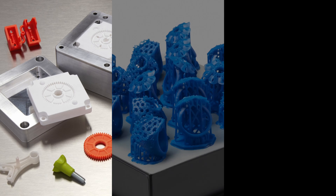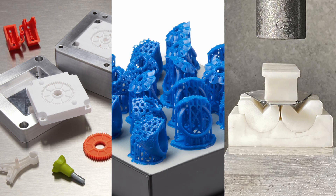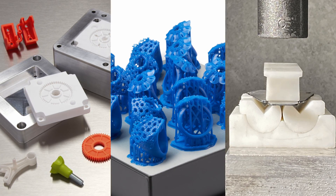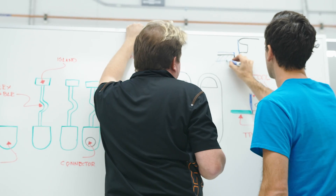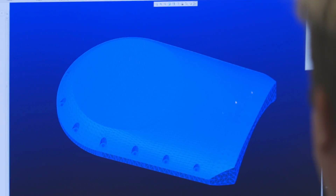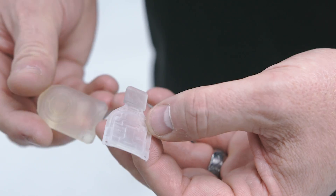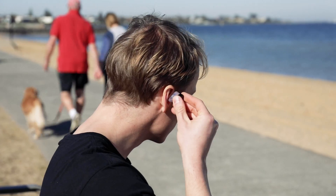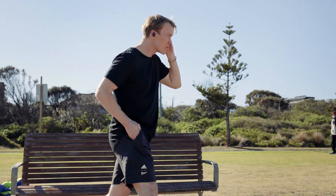Incorporating in-house rapid tooling such as 3D printed molds, patterns, and dies into the product development process empowers businesses to validate the design and material choice with functional prototypes before transitioning to mass production, and provides affordable means to produce custom or limited series of end-use parts.